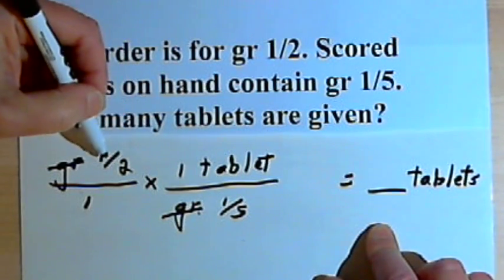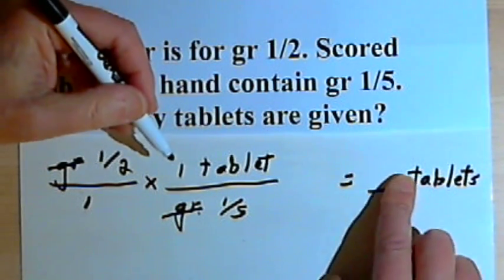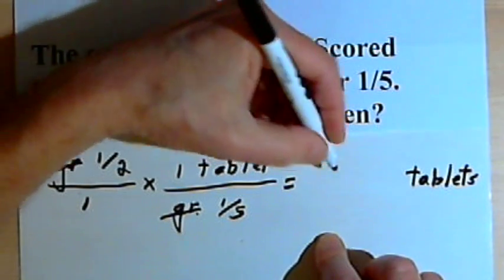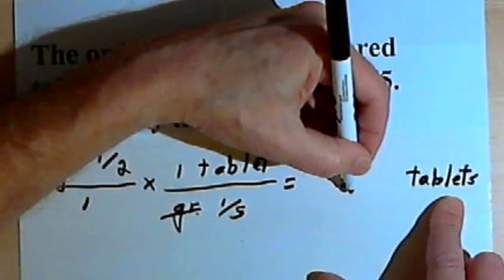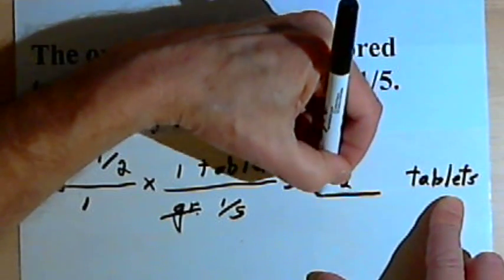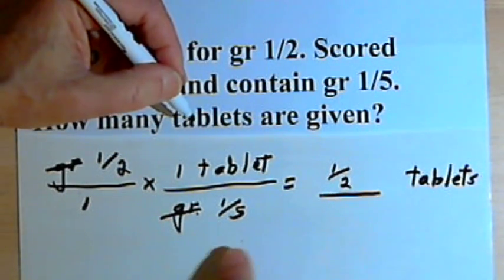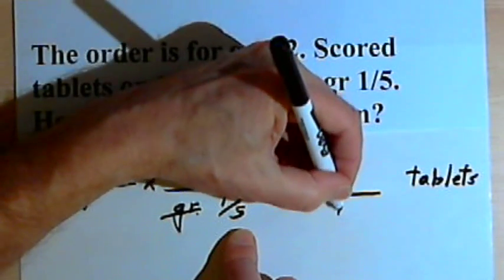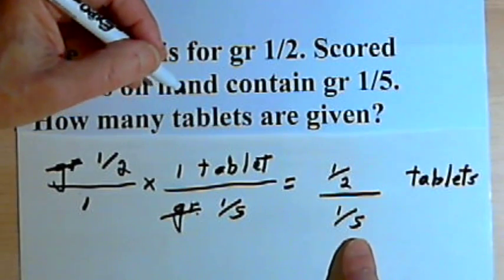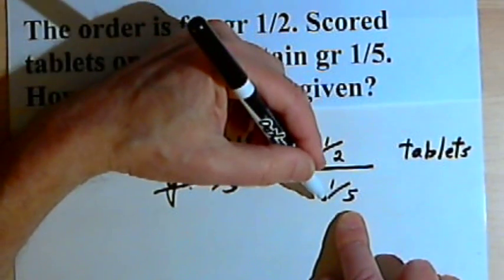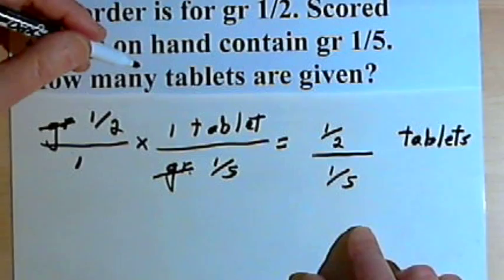because then I'll be left with nothing but tablets and I want tablets as my answer. When I multiply the numerators, I get one-half times one tablet, so that's going to be one-half. I've got tablets written in already. That one-half, that fraction, is the numerator of another fraction, one times one-fifth, which is what happens when I multiply the denominators. Now I know this looks kind of scary, one-half over one-fifth, but let's remember how to deal with fractions.